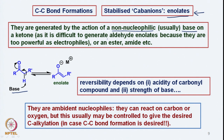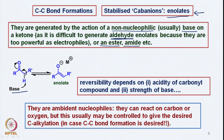We are not taking an aldehyde as the carbonyl compound to generate enolates, because enolates generated from aldehydes are very reactive. Aldehydes are very electrophilic in nature and therefore generally condense with each other, making it inconvenient to generate an enolate from an aldehyde. But we can take a ketone, an ester, or an amide, which are easy to generate the enolate from.